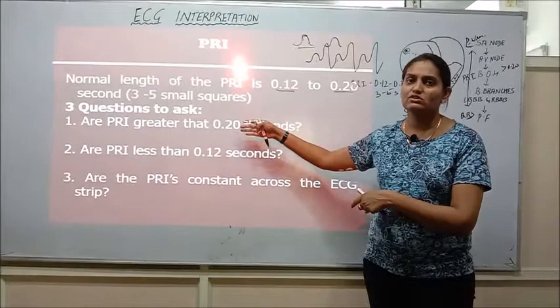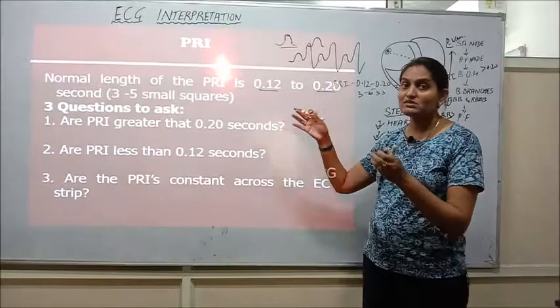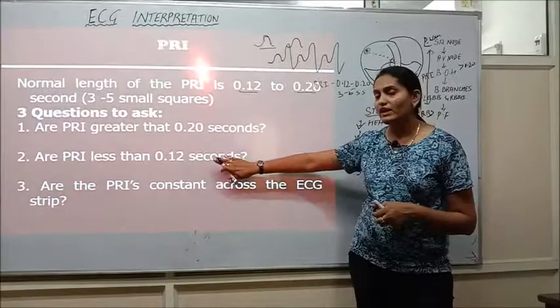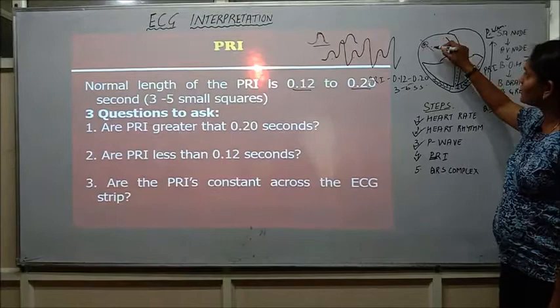Second is PR interval less than 0.12 seconds. That means that is a narrow complex, narrow means this time interval is less, short, which means that this is a type of atrial dysrhythmia.